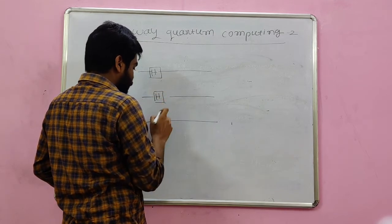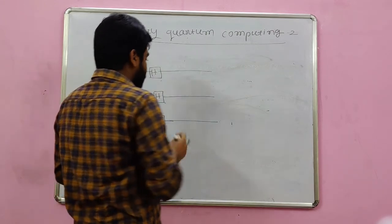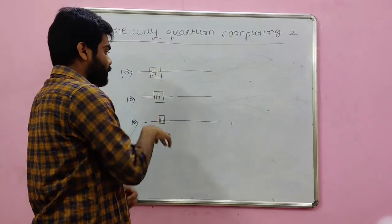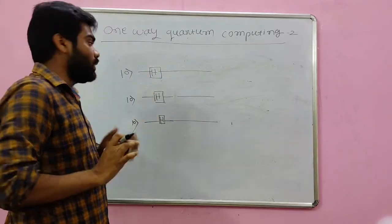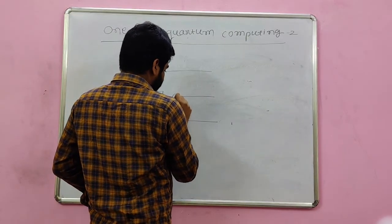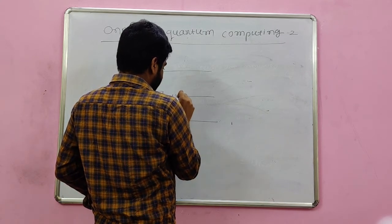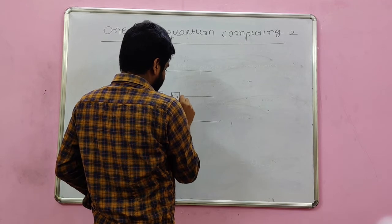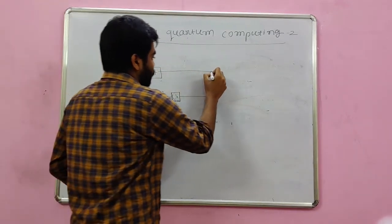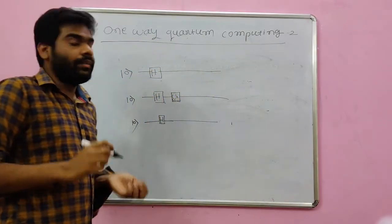The Hadamard gate will make these superposition states. After the Hadamard gates we will apply the phase gate, not to the first one and the last one, only to the middle qubits. And after that we will apply the phase gate between the neighboring qubits.